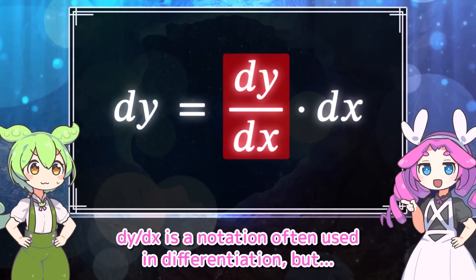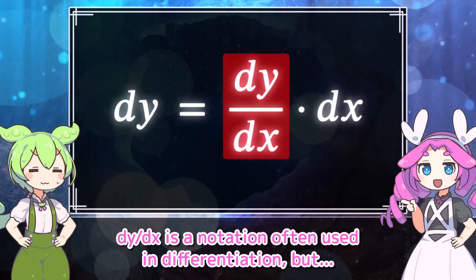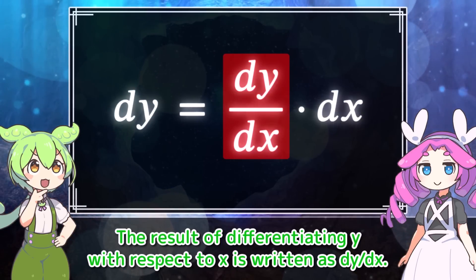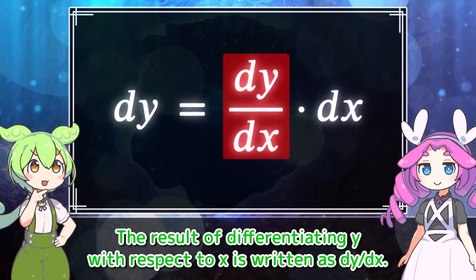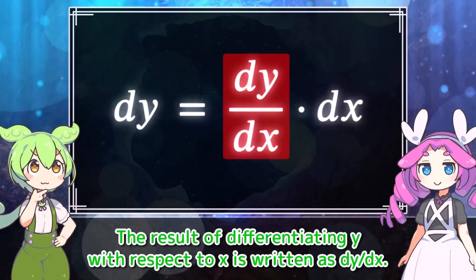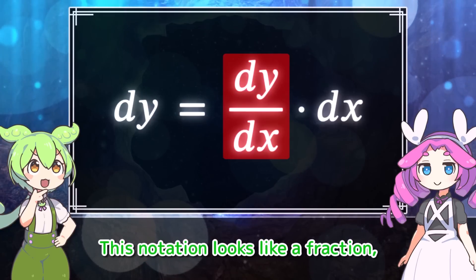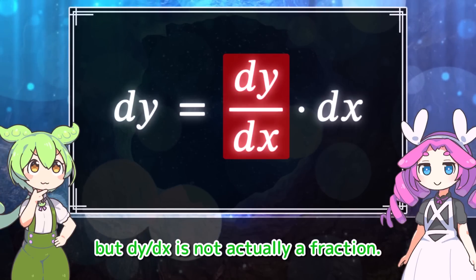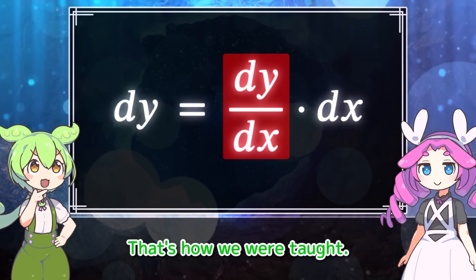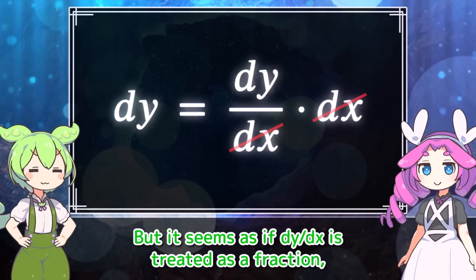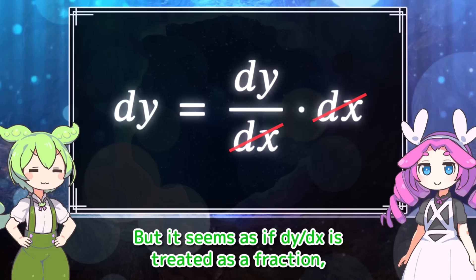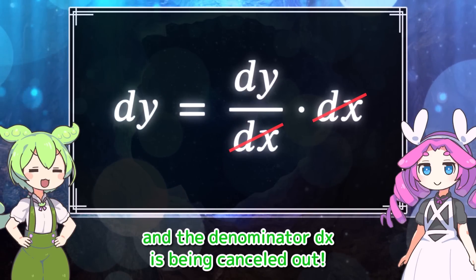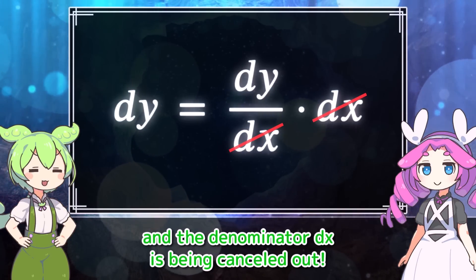dy by dx is a notation often used in differentiation. The result of differentiating y with respect to x is written as dy by dx. This notation looks like a fraction, but dy by dx is not actually a fraction. That's how we were taught. But it seems as if dy by dx is treated as a fraction, and the denominator dx is being cancelled out.